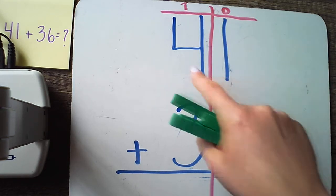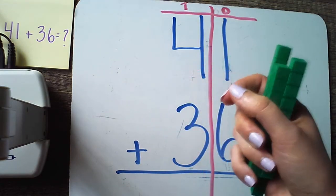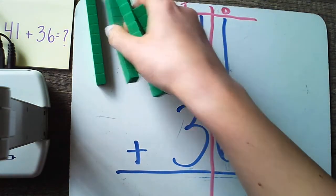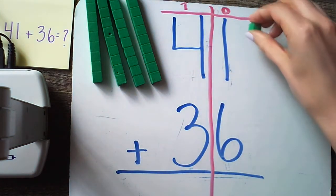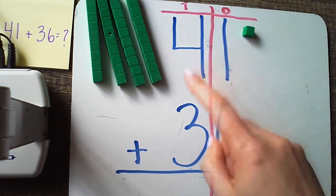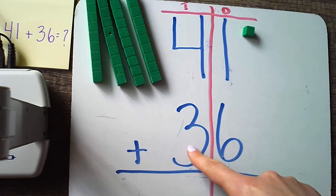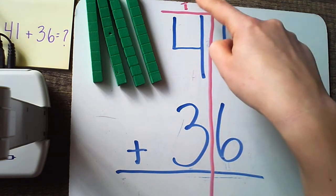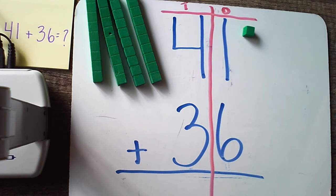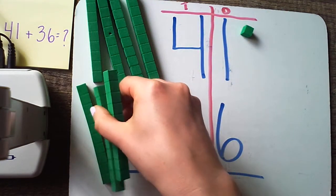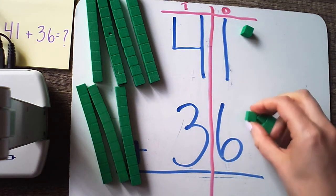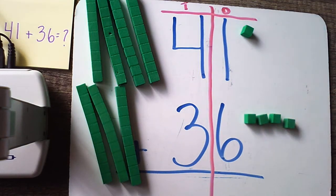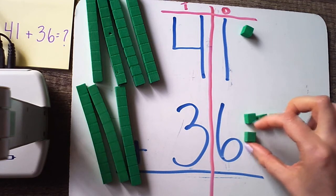I'm going to go ahead and grab my base ten blocks. I know that the four in forty-one is really telling me I have four groups of ten, so I'm going to lay out my four groups of ten. Then I've got one leftover one. Here's forty-one. Now I'm going to represent thirty-six. The three here isn't really three — it's actually three groups of ten. So I'm going to grab three tens: one, two, three. And then six leftover ones in the number thirty-six — one, two, three, four, five — using my invisible ten frame, I know the top row can have five, then I have to go to my bottom row — six.